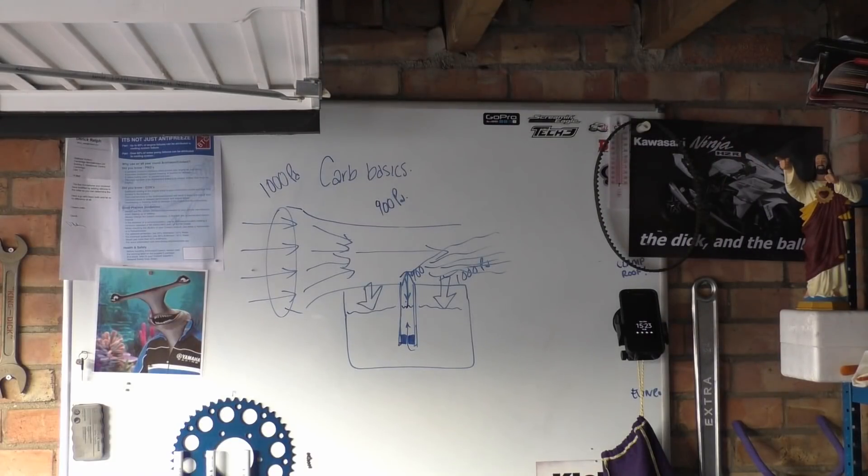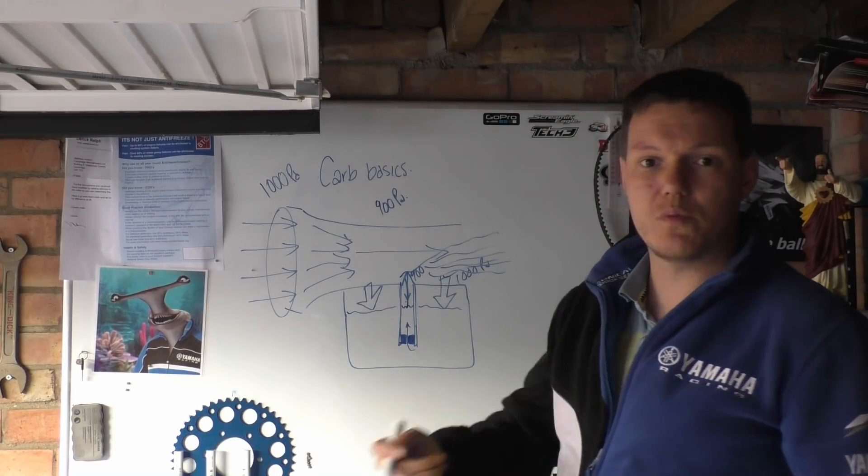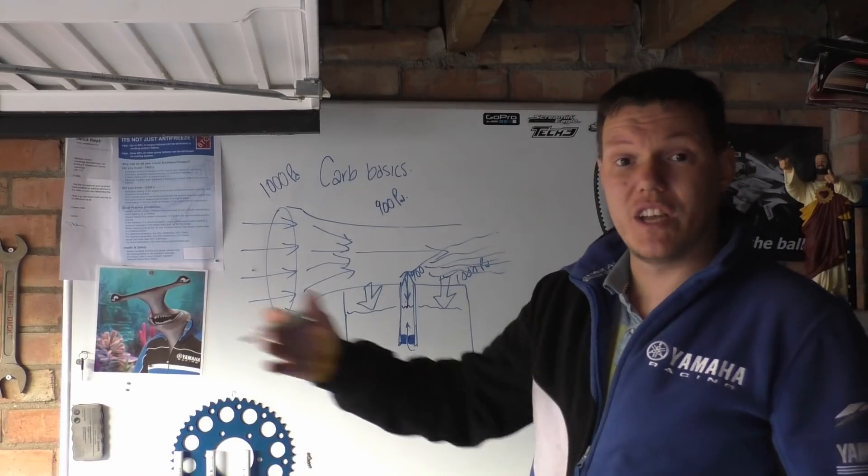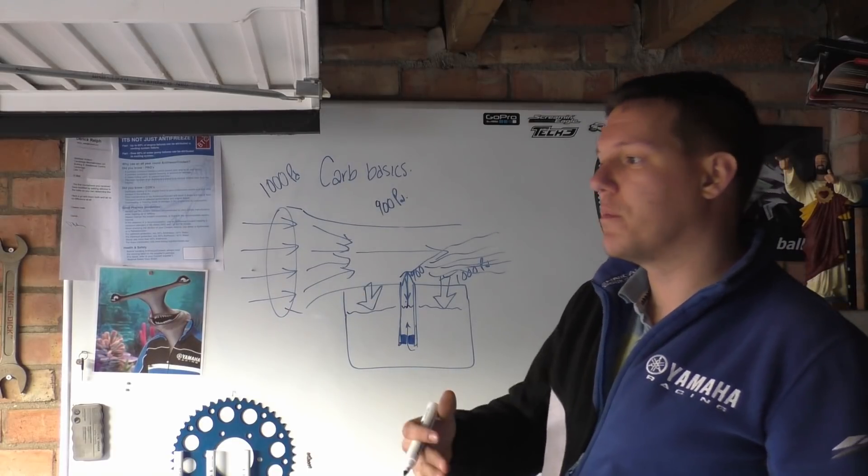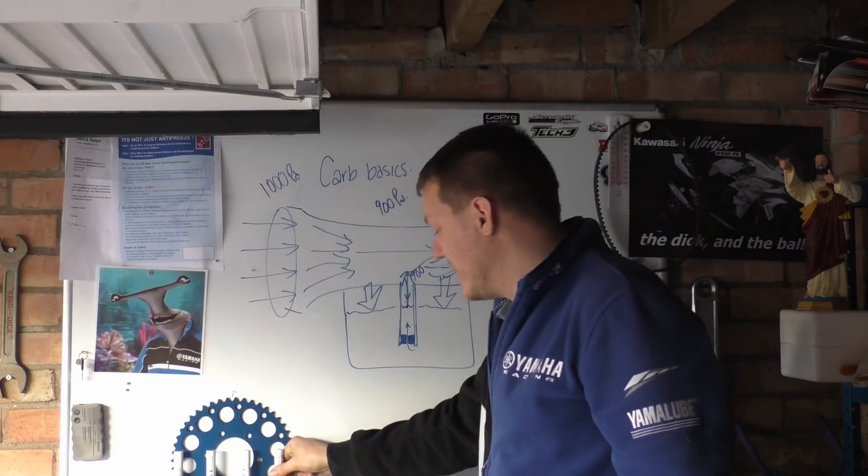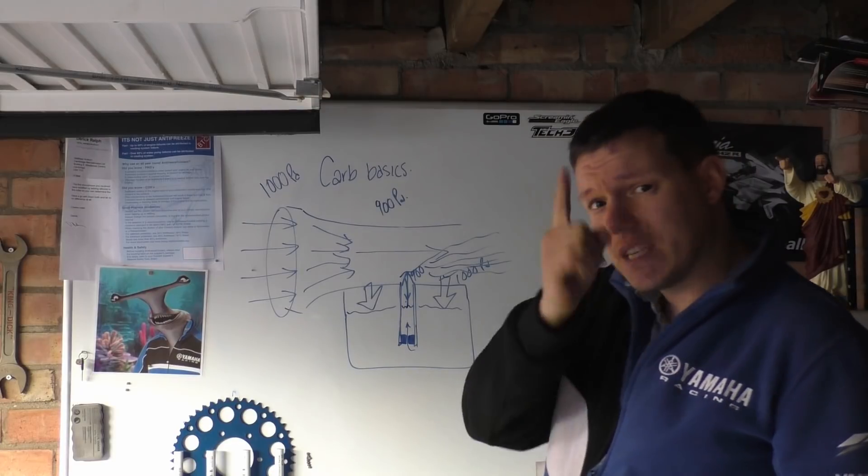Next thing we need to cover is how we actually throttle this, how we actually control this. We don't just want a continuous static amount of fuel. We want to be able to enrich it and lean it off, not so much lean it off but enriching it and then bring it back down to our set metering volume. Hope that makes sense, and I'll see you in a bit.